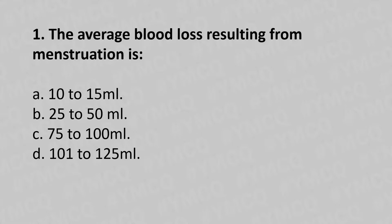Question 1: The average blood loss resulting from menstruation is — option A: 10 to 15 ml, option B: 25 to 50 ml, option C: 75 to 100 ml, option D: 101 to 125 ml. The answer is option B: 25 to 50 ml.